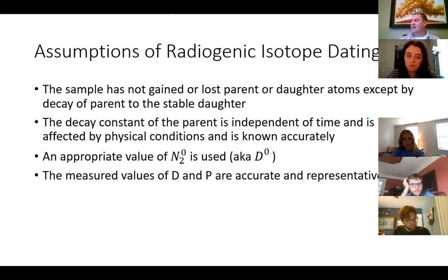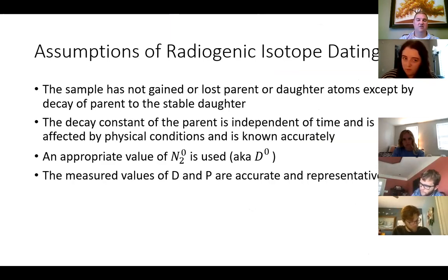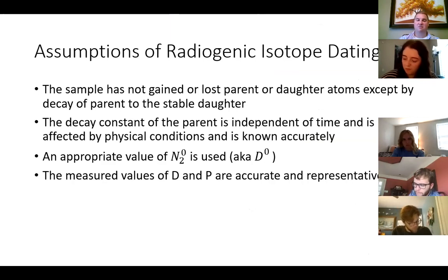When you're doing this kind of dating and trying to create isochrons, the assumptions are: the sample has not gained or lost any parent or daughter atoms except through natural radioactive decay; and the decay constant of the parent is independent of time — it doesn't change.